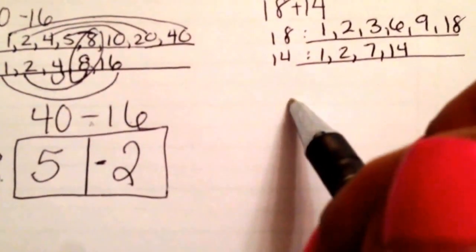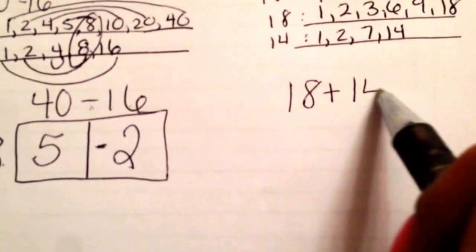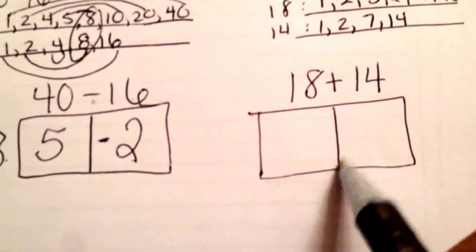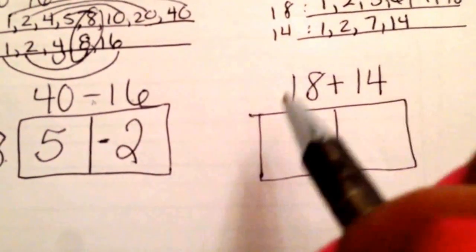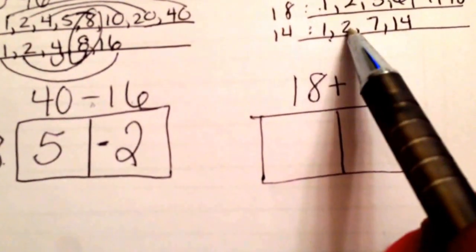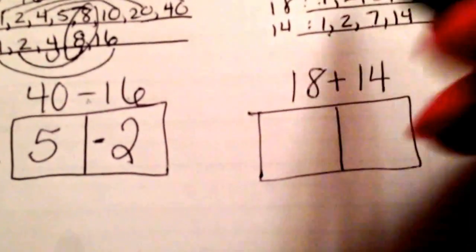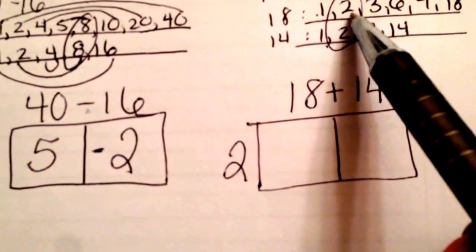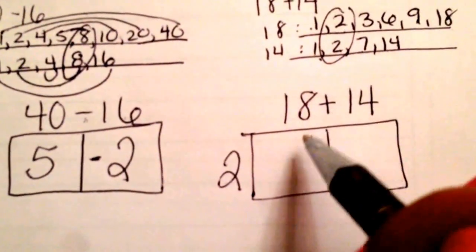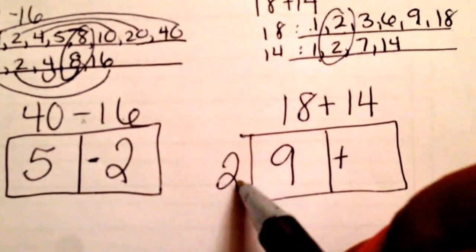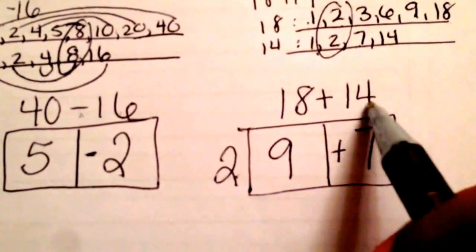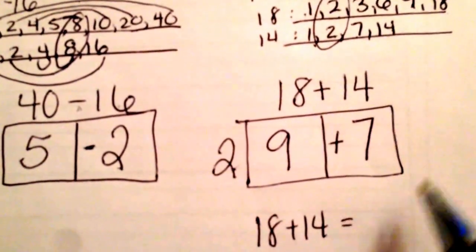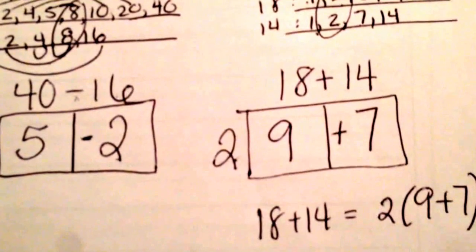Okay. Same thing here. 18 plus 14. Look for what they have in common. They have 1s, 2s, and nothing else. So 2 is the greatest common factor. Put the 2 out there. 2 times 9 makes 18. 2 times 7 makes 14. So my equivalent expression for this one is 2 times 9 plus 7.